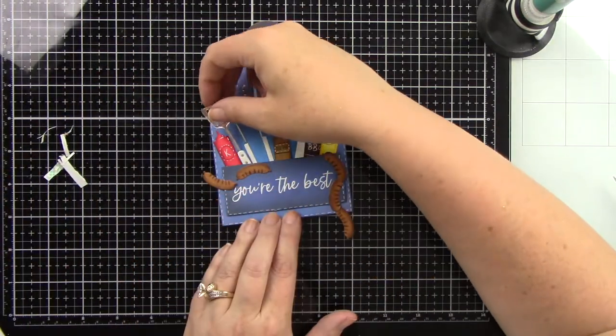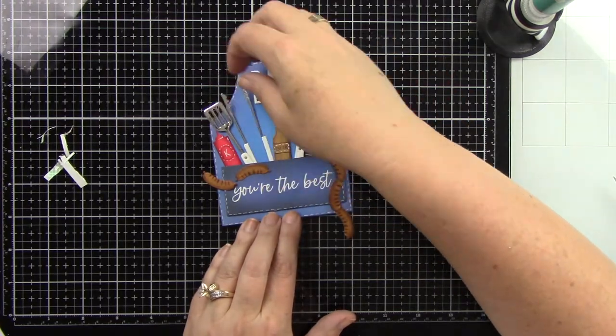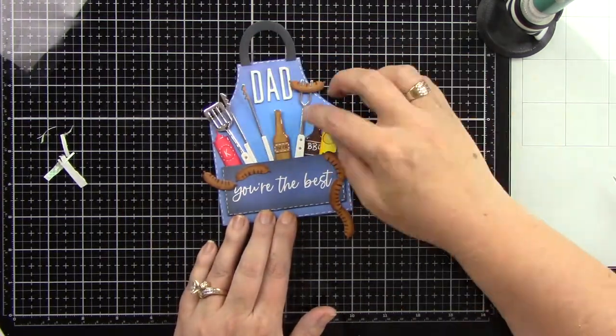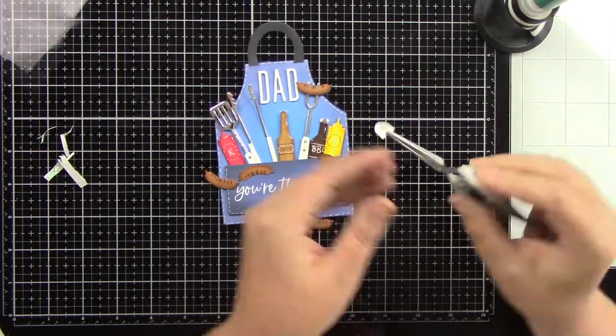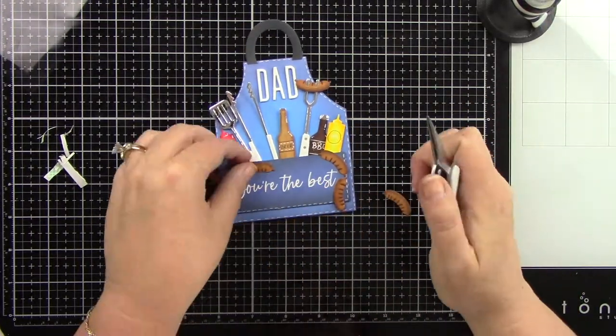So I'm going to adhere all of those in. And then the rest of those little hot dog sausage things, I'm going to make it look like they are all hooked together and hanging out of the apron pocket.